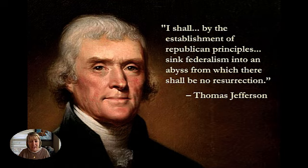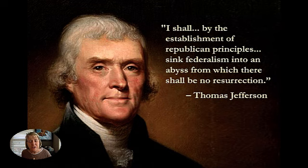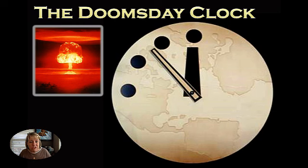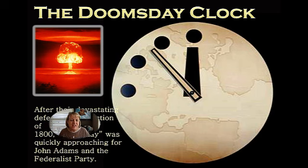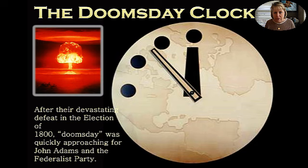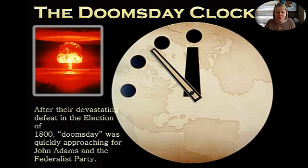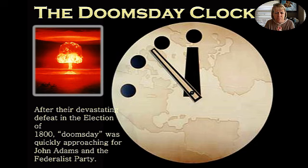Members of the Federalist Party saw this as an absolute threat. They see Jefferson as the beginning of the end of the Federalist Political Party. Once Jefferson is determined to be the next President of the United States, the doomsday clock is ticking. The doomsday clock is a fictitious clock set up to determine when nuclear disaster is going to hit the world — scientists move it a minute ahead or behind each year. For the Federalists, their doomsday clock meant when Jefferson becomes President, the Federalist Party may cease to exist. So Adams and his Federalist-controlled Congress are going to do everything they can to protect their party.